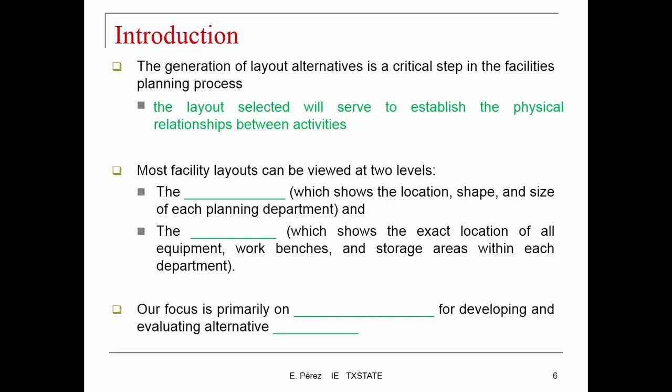Most facility layouts can be viewed at two levels: the block layout, which shows the location, shape, and size of each planning department, and the detail layout, which shows the exact location of all equipment, board benches, and storage areas within the department. Our focus in this course is going to be on quantitative methods for developing and evaluating alternative block layouts.